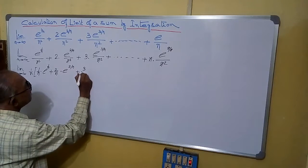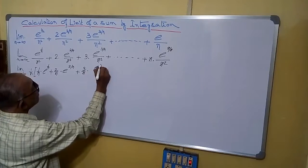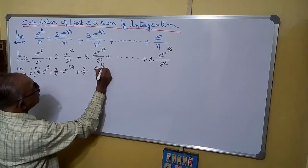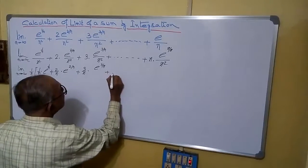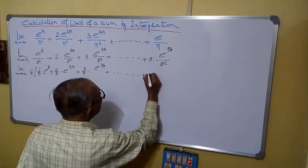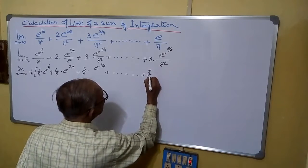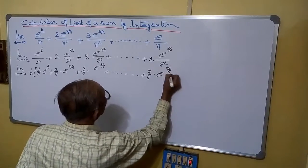here it will be 3/n·e^(3/n), plus so on. And the last one will be n/n·e^(n/n).